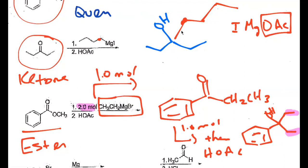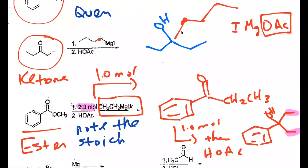Two moles of Grignard plus an ester is going to give you an alcohol. The original OCH3 is going to leave as a leaving group — it'll end up as methanol because it'll eventually get protonated. So that stoichiometry matters.